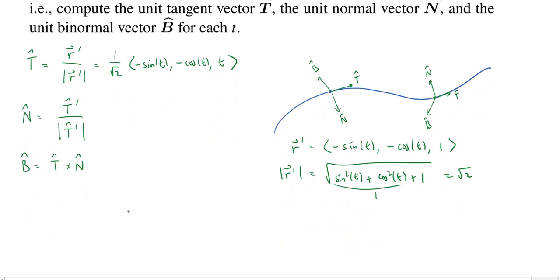All right. So next, we need to compute the derivative of this unit tangent vector. All right. Well, first thing, we have this one over root two. That can just stay out there as a constant. Derivative of negative sine will be negative cosine. Derivative of negative cosine is sine. And the derivative of, oh, we copied this down wrong. This was a one. Derivative of one is zero.